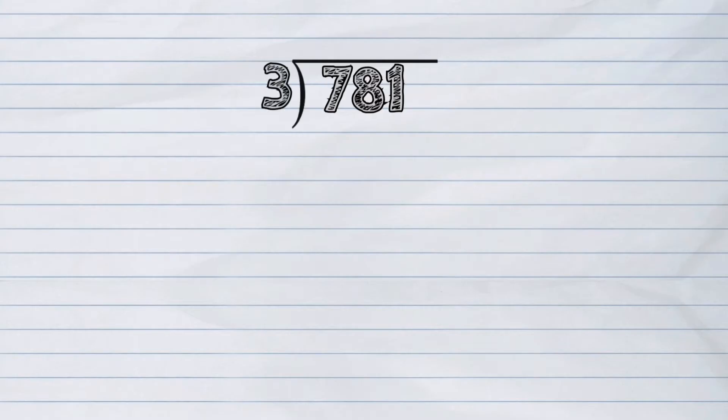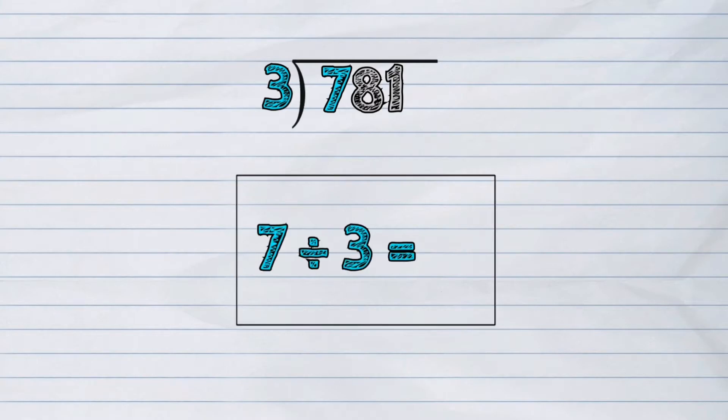Let us start with the first number of dividend, which is 7. This will be divided by the divisor 3. How many times can we divide 3 into 7? The answer is 2! So, we should put digit 2 in the quotient line.